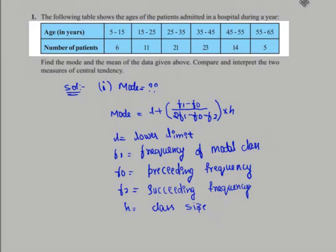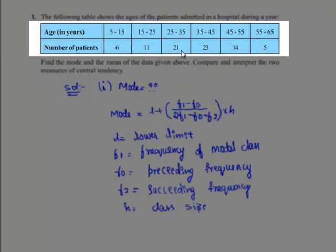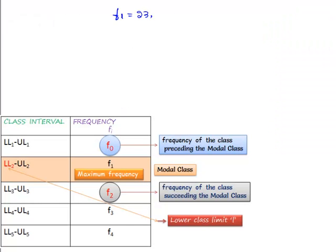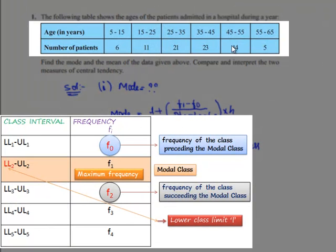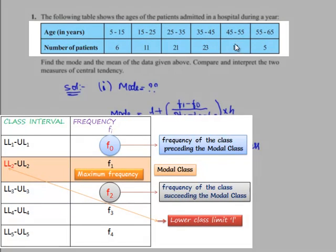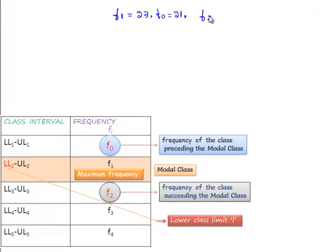The preceding frequency for the frequency of the modal class is 21, so F0 is 21. Similarly, the frequency succeeding the frequency of the modal class is 14, so F2 is 14.